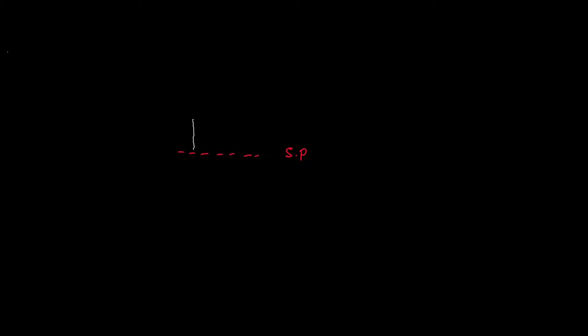Let's look at scenario 1. This is our starting point, SP. We're taking an object from SP and moving it forward or upward. The object travels in an upward direction and reaches point A. Point A is above the starting point, and at this point the object is moving upward.